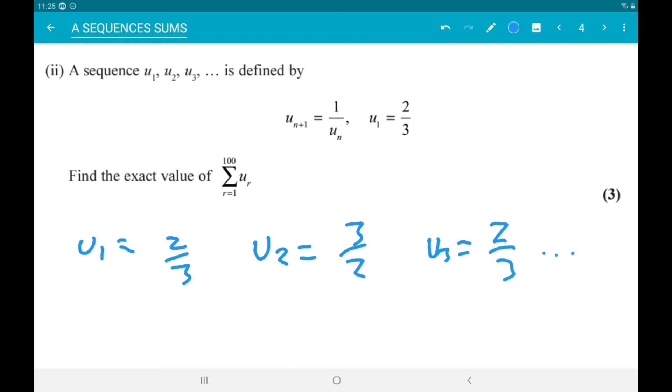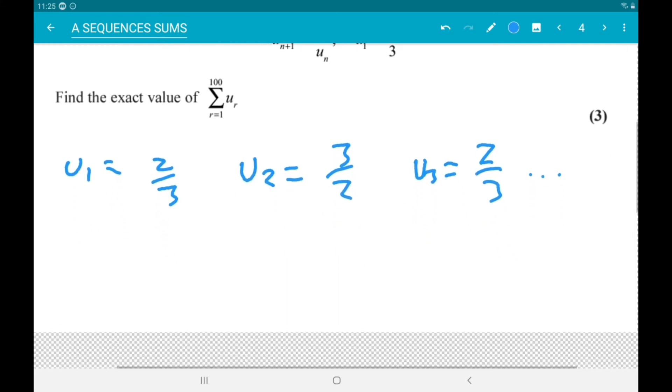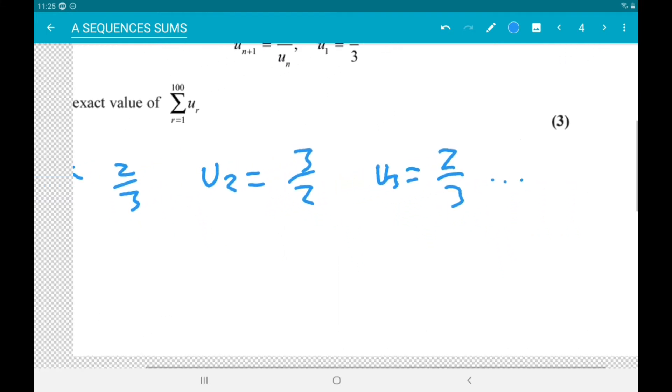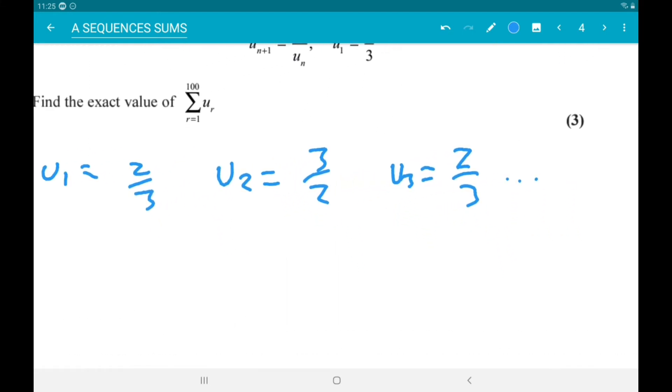And that is going to carry on forever. So we want the sum of the first 100 terms and all it's doing is going two thirds, three halves, two thirds, three halves. So half the terms are going to be two thirds, half the terms are going to be three halves.